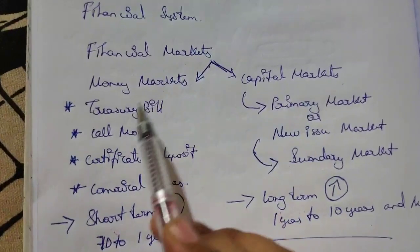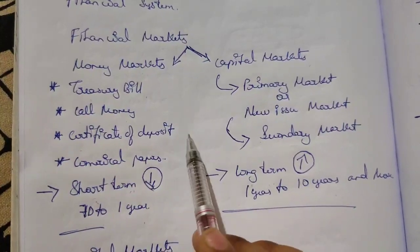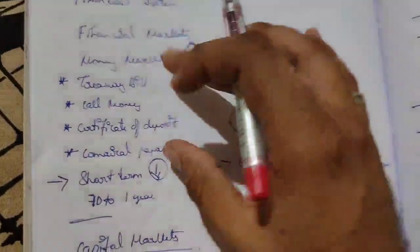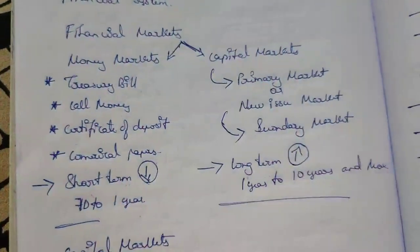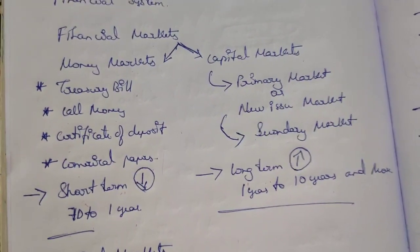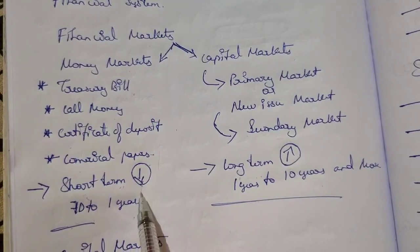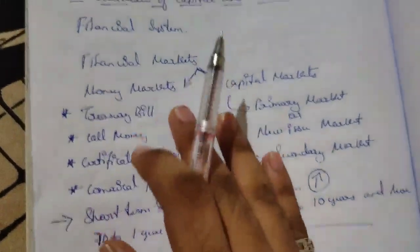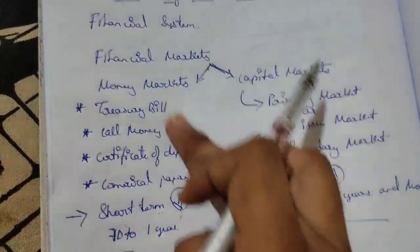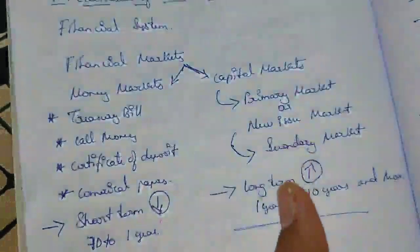In the money market, we have treasury bills, call money, certificates of deposit, commercial papers, and more. These are things we have learned before and they are very easy. You don't need to write meanings for all of them — you just have to know these are the facilities provided by the money market.